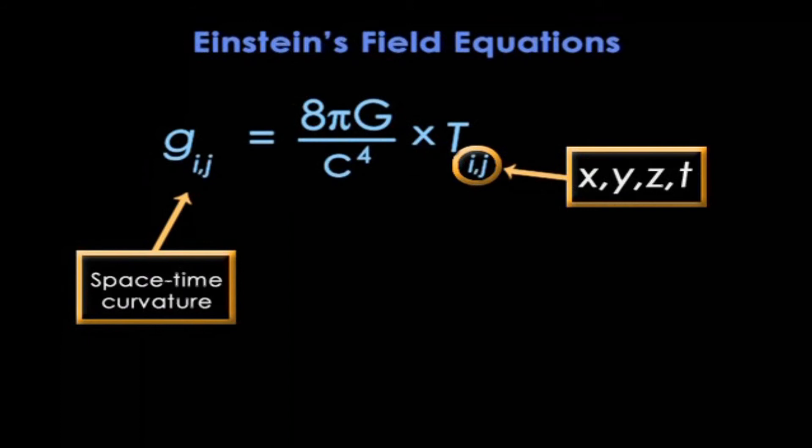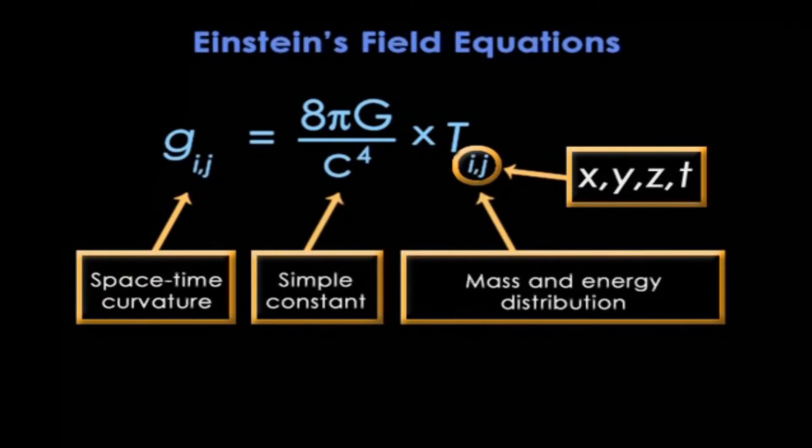Now, the left-hand side, G_ij, specifies the space-time curvature, while the right-hand side, T_ij, specifies the distribution of mass and energy within the space.